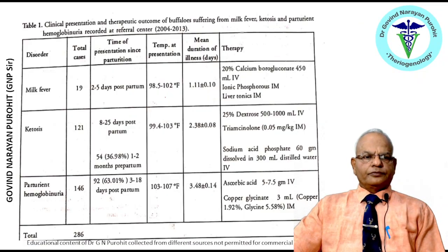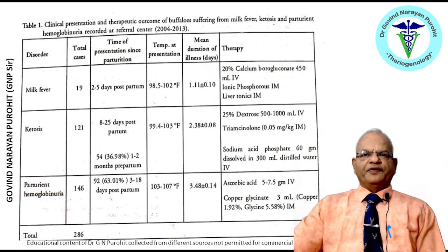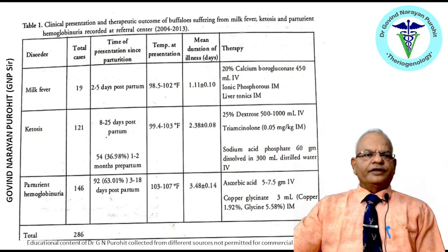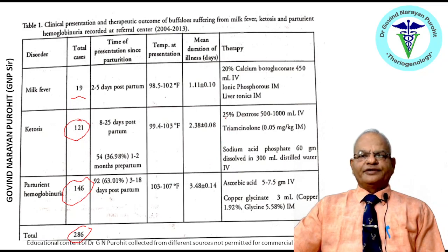In a clinical analysis of 286 buffalo cases from 2004 to 2013 presenting with milk fever, ketosis, and parturient hemoglobinuria, we found the maximum incidence was for ketosis, followed by parturient hemoglobinuria; hypocalcemia was relatively uncommon in buffalo. Buffaloes responded very well to administration of 25 to 50 percent dextrose, triamcinolone, and sodium acid phosphate for parturient hemoglobinuria.